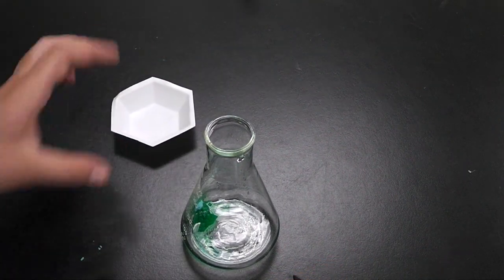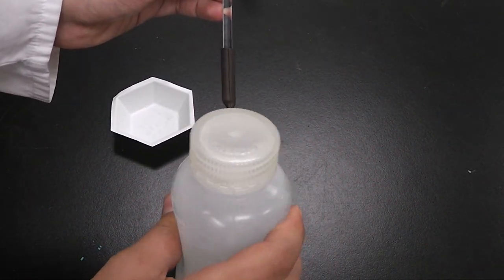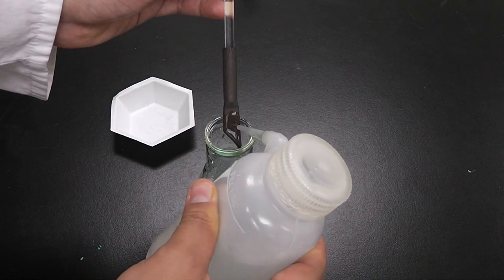When you've made sure that all the sample is washed into the Erlenmeyer flask, don't forget to rinse your rubber policeman as that will probably have sample on the edges.